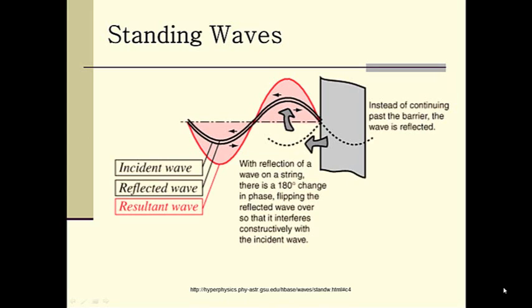Hello, today we're going to talk about standing waves. When two waves of equal amplitude and wavelength pass through each other in opposite directions, it is possible to create an interference pattern, and the wave will appear to be standing still or motionless.